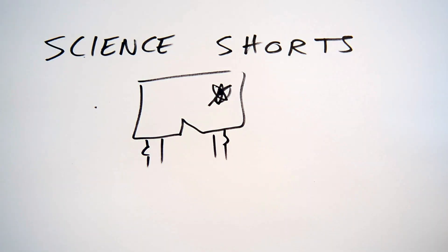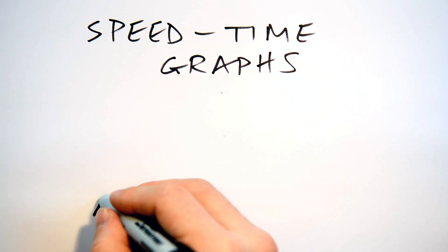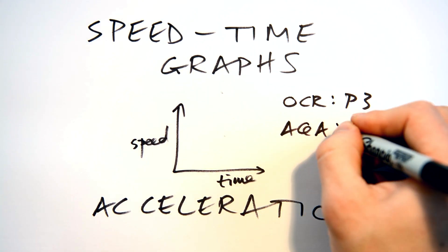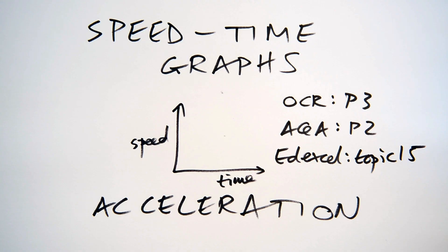Science Shorts gives you speed time graphs and acceleration. For those of you doing OCR Science GCSE, this will be topic P3, AQA will be P2, and Edexcel will be topic 15.